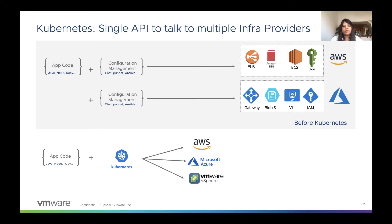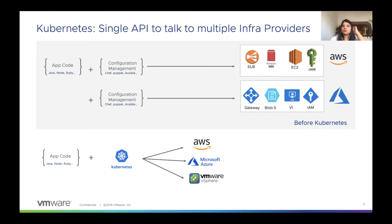And this is where the power comes in, where the wall is broken and application teams — the development teams themselves — can define very simply what the end state of that workload needs to be and push it to a Kubernetes API. The Kubernetes cluster in the back end works with your infrastructure provider to make all of this magic happen. I feel like this is really the crux of why Kubernetes is so popular.